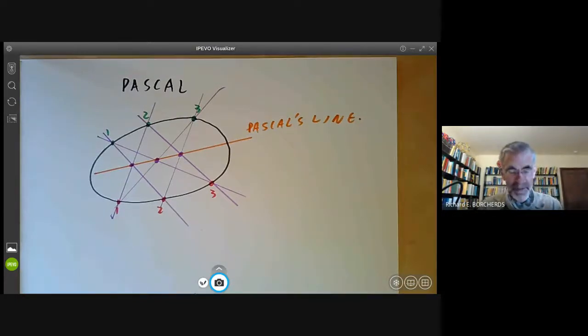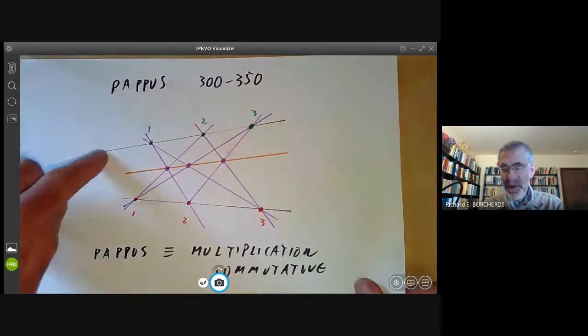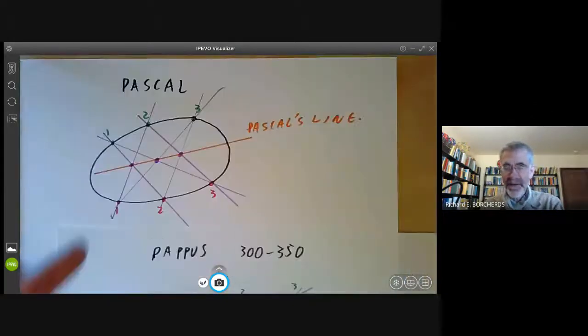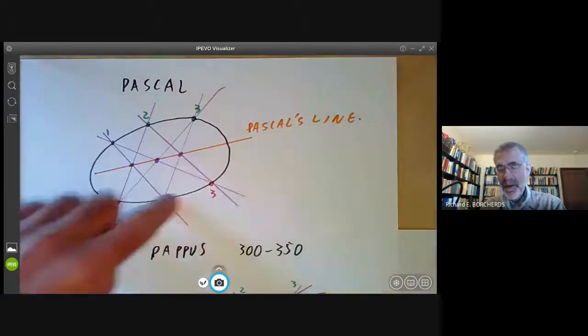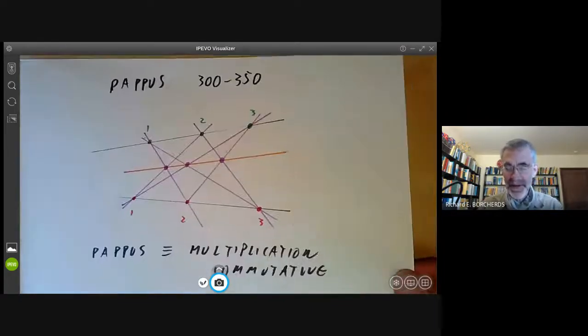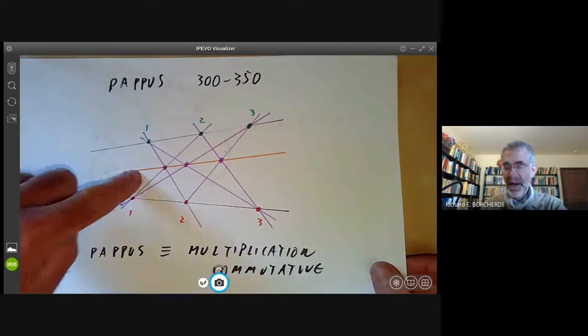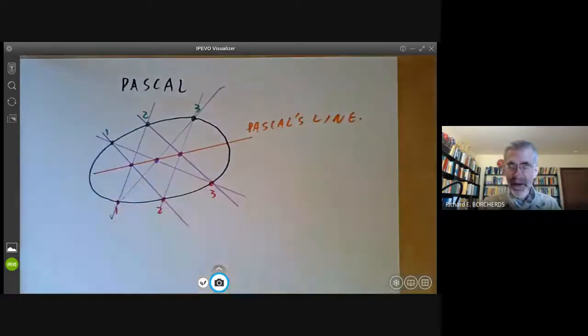And it should be pretty obvious from the way I've drawn them that Pascal's theorem is very similar to Pappus's theorem. In fact, you can see that Pappus's theorem is really the special case of Pascal's theorem. So Pascal's theorem holds where this is any degree two curve. And one rather special case of a degree two curve is just two straight lines. It's a sort of degenerate case. So here we have a degree two curve consisting of two straight lines. And you can see that Pappus's line is just the same as Pascal's line in this special case.